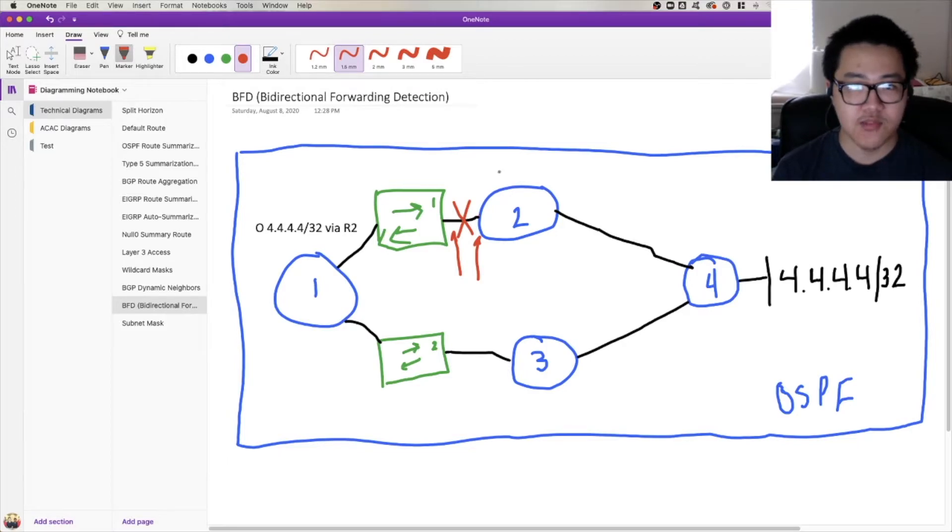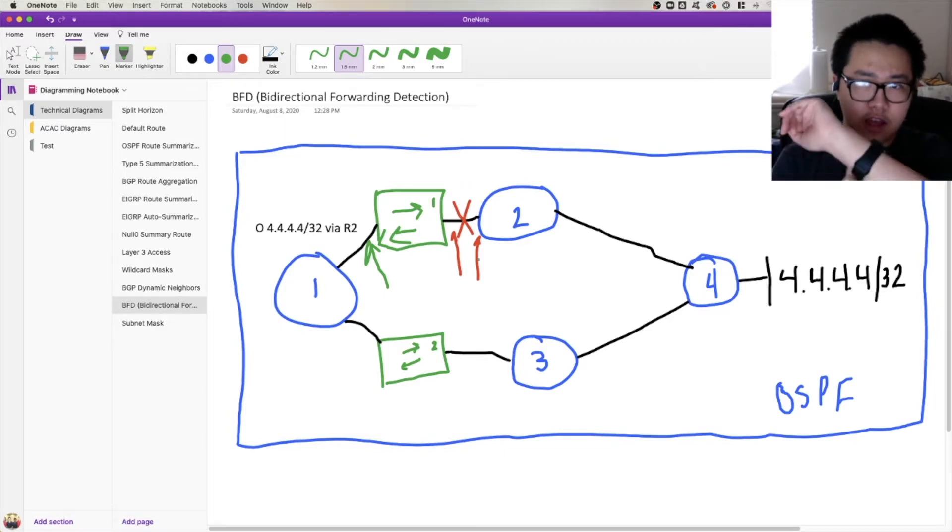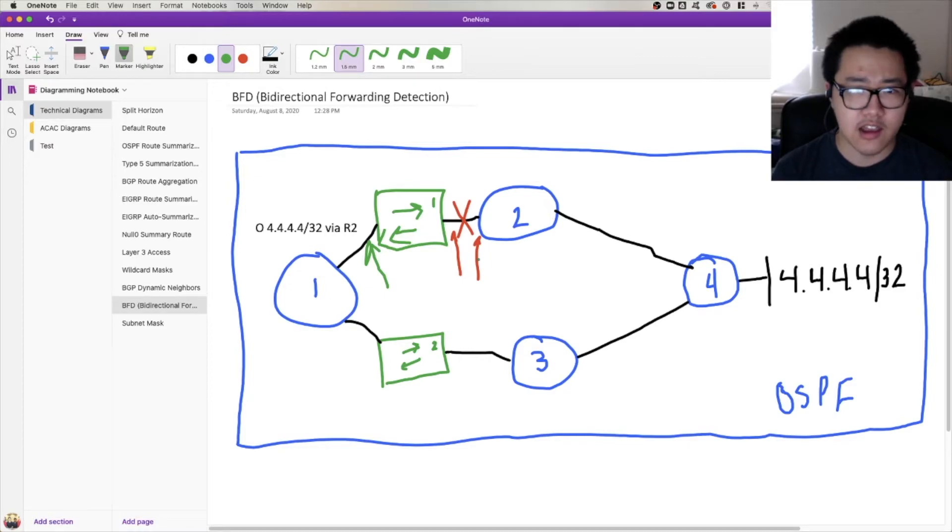All fine and dandy, except for the fact that because this isn't a layer 1 or 2 failure from R1's perspective, this interface is still up and going. And so R2 will have brought down its side of the adjacency, but R1 knows nothing about what happened over here. The only thing it knows is hey well, I'm looking at my interface. It's still up, but huh, interesting. This router here, this router 2 over here isn't sending me any more OSPF hello packets.